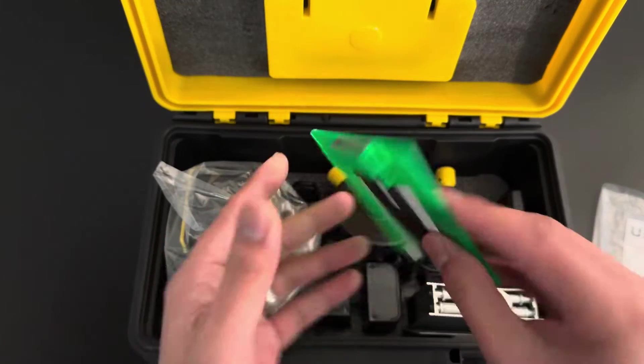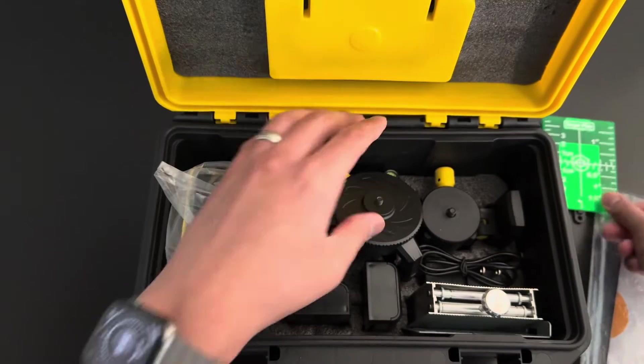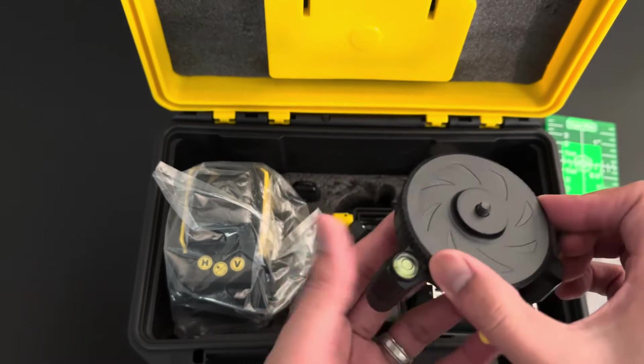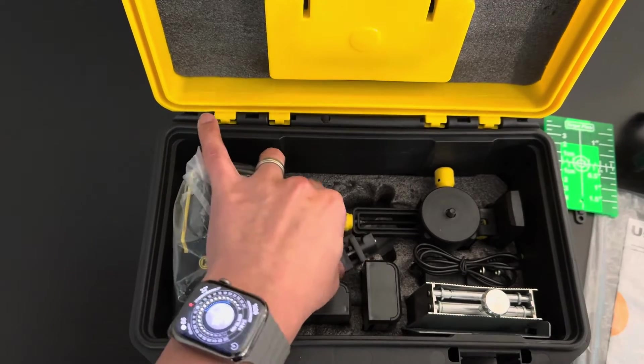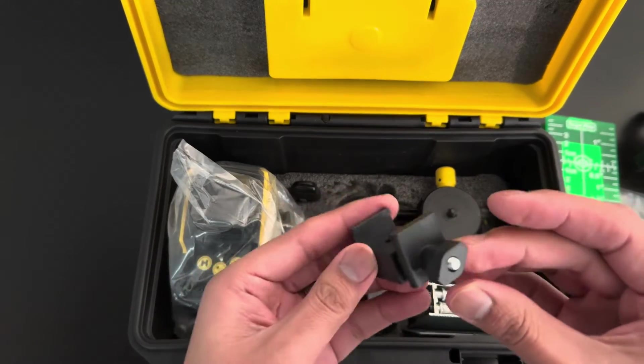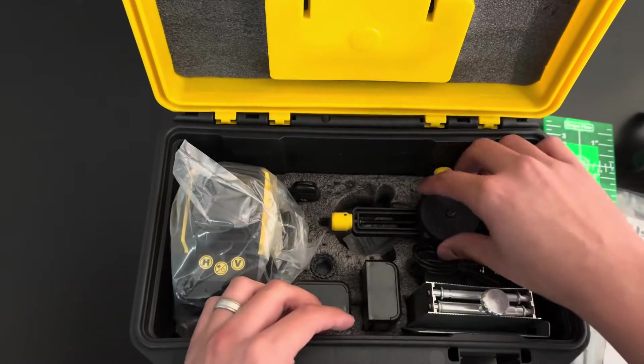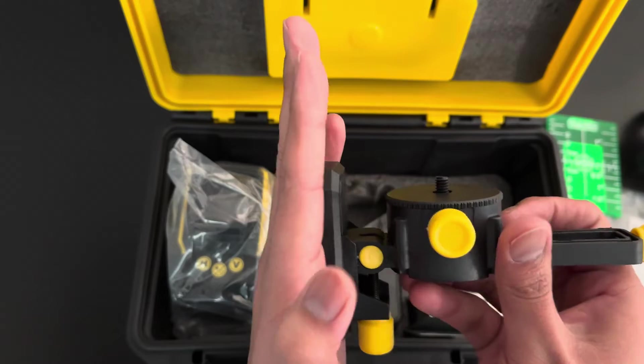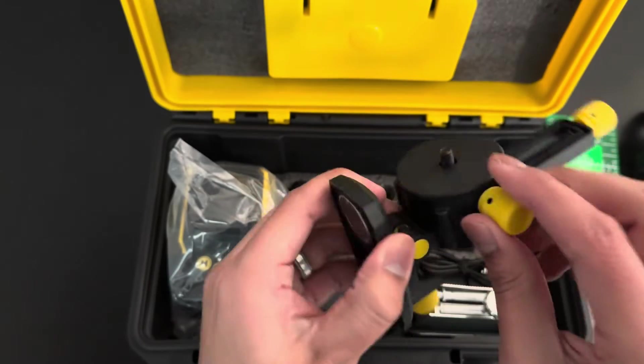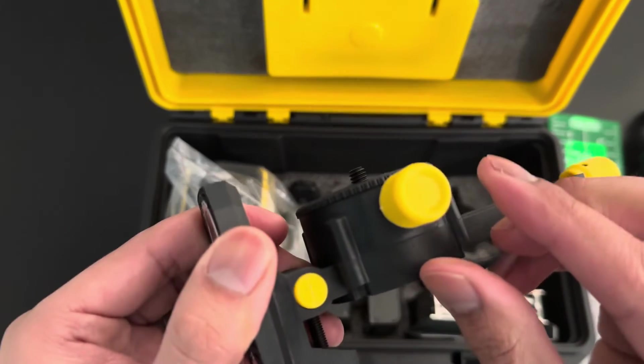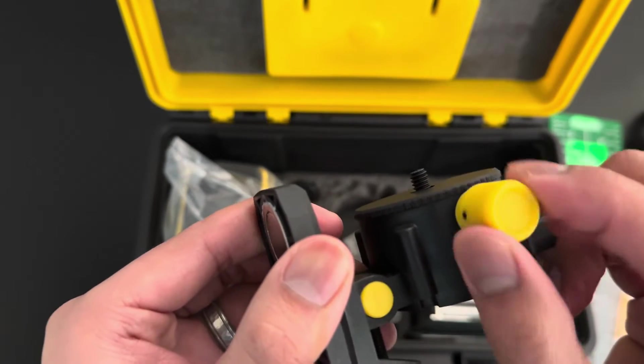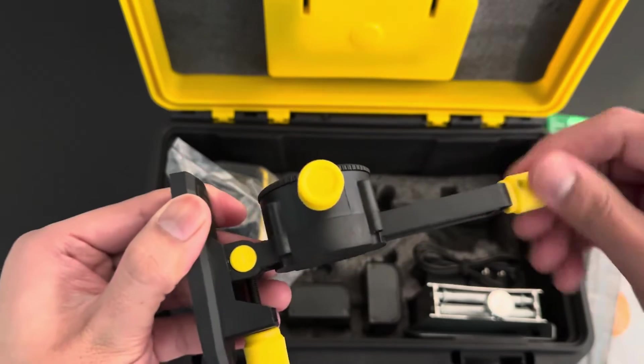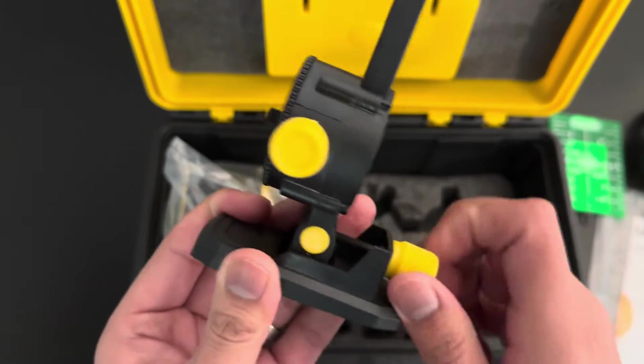We do have the accessories it comes with. This is going to be the magnetic mount. Instead of using the tripod, this as you can see turns the little mounting plate, and then this one's gonna pull it back and forth to help you adjust. And this one goes up and down.